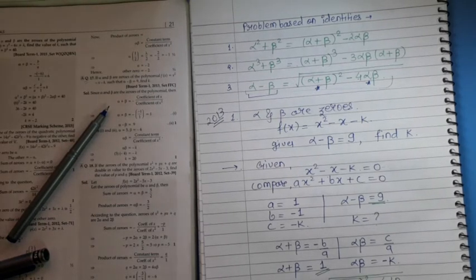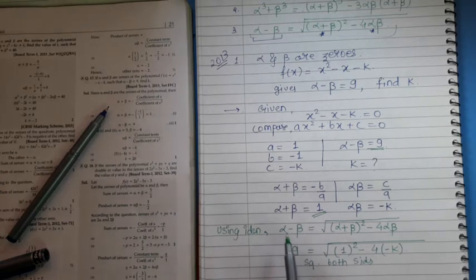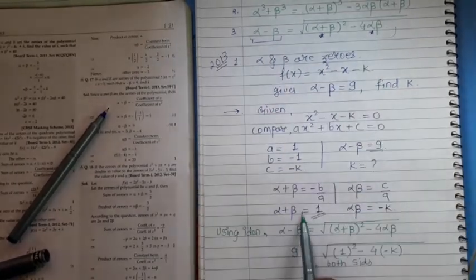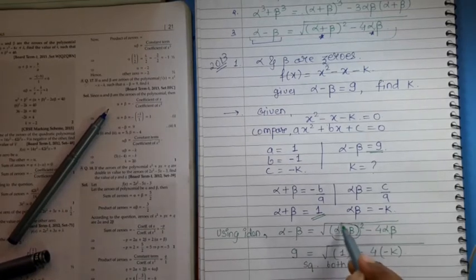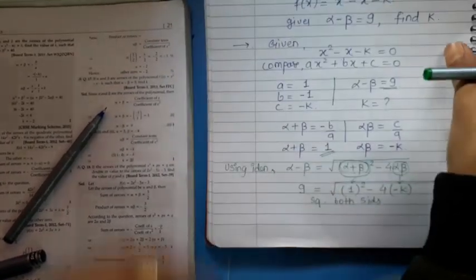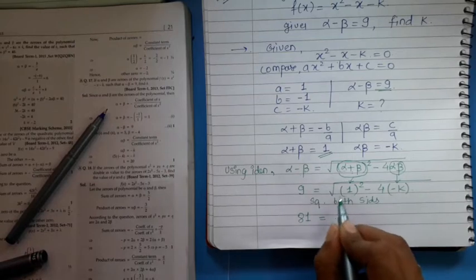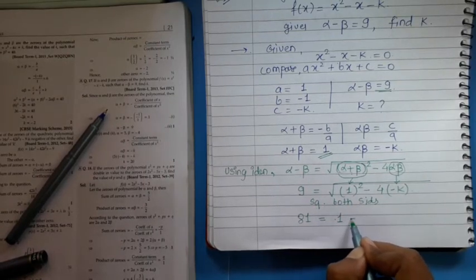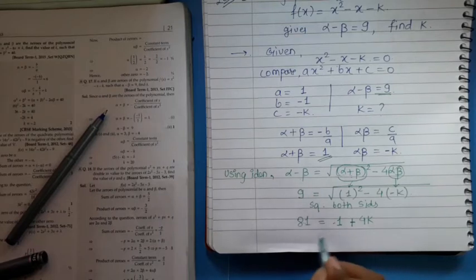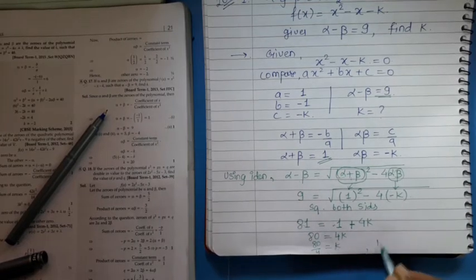Squaring both sides: 81 equals 1 plus 4k. So 81 minus 1 equals 80 equals 4k. Therefore k equals 80 upon 4, that means k equals 20.